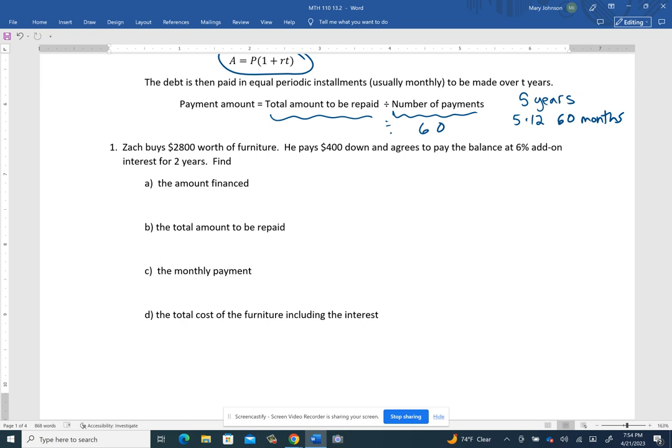So there's several things we're trying to find here. We want to find how much he financed. So the furniture was $2,800, but he's going to pay $400 up front. So that means he's not going to finance the whole 2,800. He's going to only finance $2,400. So that's the amount financed.